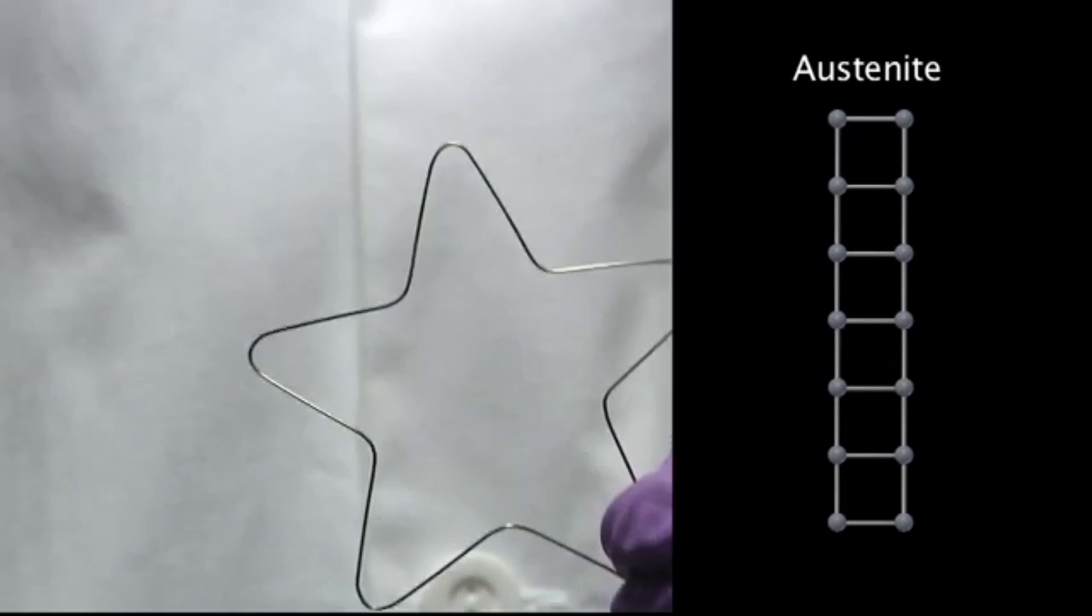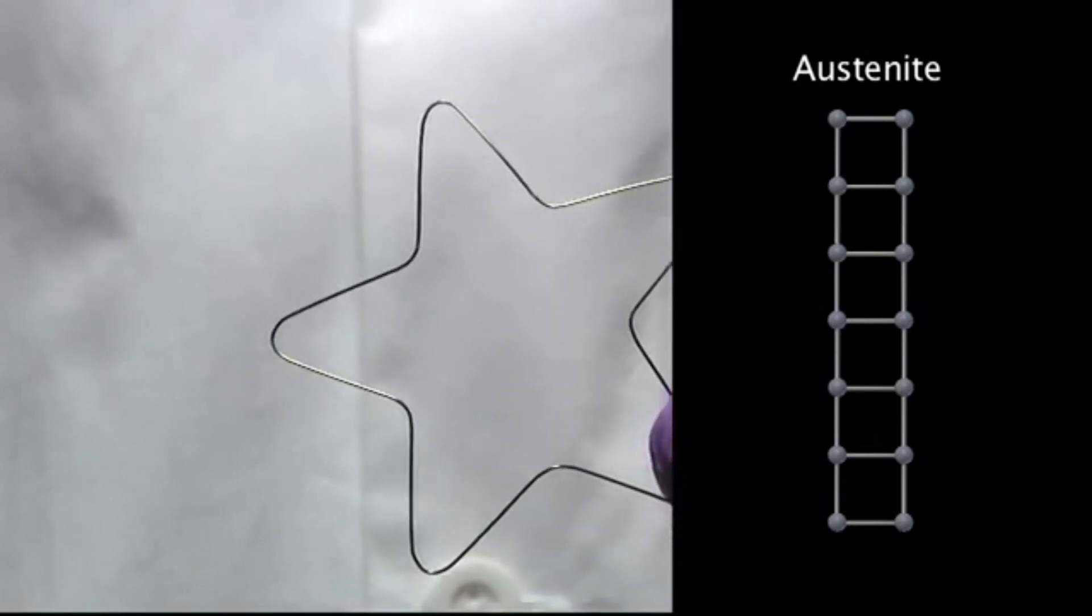But if we release the stress, it goes right back to the austenite phase, and the original shape, because that is where it is stable at this temperature.